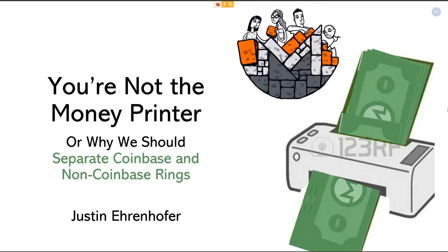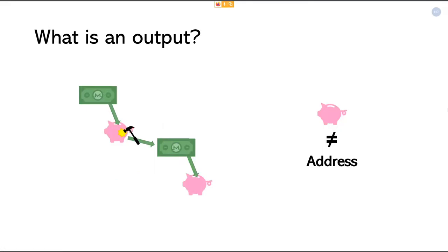First, let's cover what an output is. Outputs are simply piggy banks — I heard this example from someone else. An amount of money is put in a container, this piggy bank, and in order to spend this amount, the receiver needs to break open the piggy bank and put it in a new output, a new piggy bank. They are single use. You cannot keep putting these outputs elsewhere. So an output is just a container of money.